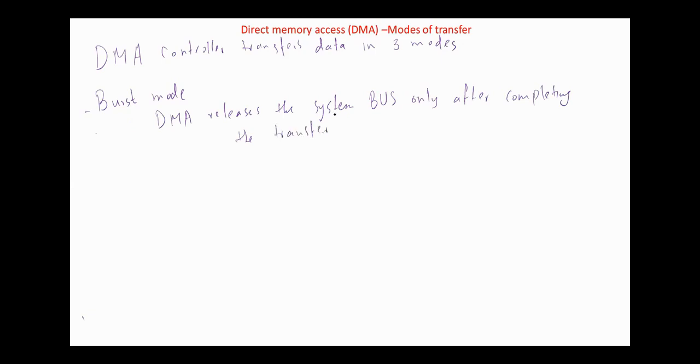The DMA controller transfers data in one of three modes. The first is burst mode. According to this mode, once the DMA gains charge of the system bus, it releases the system bus only after completion of the transfer. During this time, the CPU has to wait for the system bus.